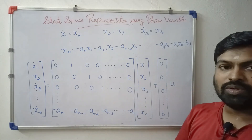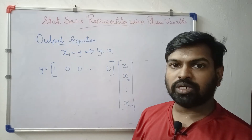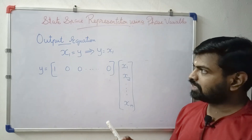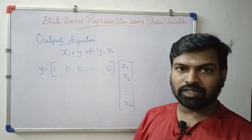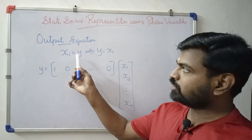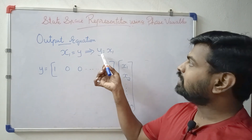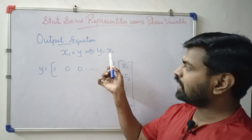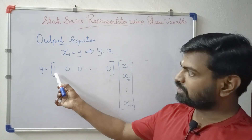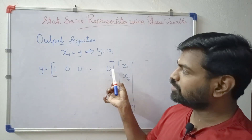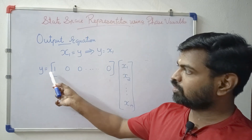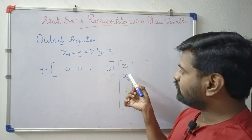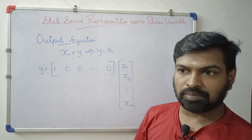So we have the state equation and the output equation. Since x1 is equal to y, the output equation is y equals x1. In matrix form, the C matrix is [1, 0, 0, ..., 0], where x1 corresponds to 1 and all other elements are 0.